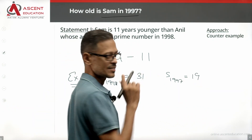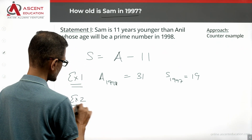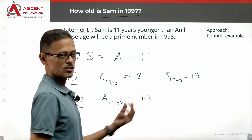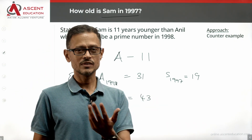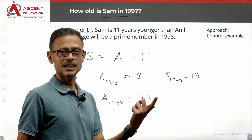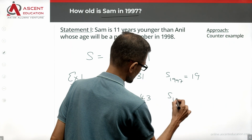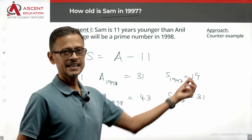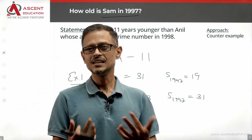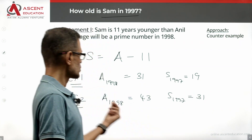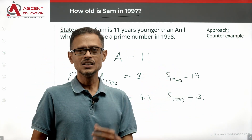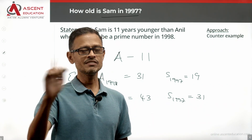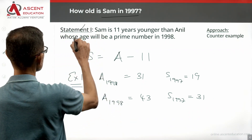Example 2 gives a different value. We don't have a unique value for Sam's age in 1997 — multiple answers are possible. So Statement 1 alone is not sufficient, and we can eliminate answer option A.